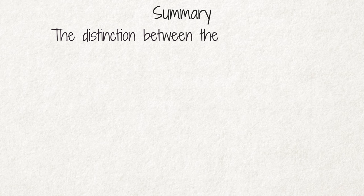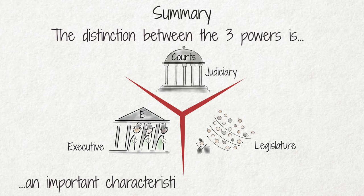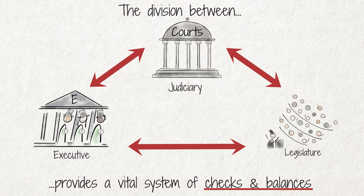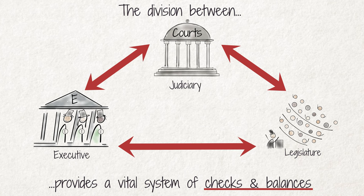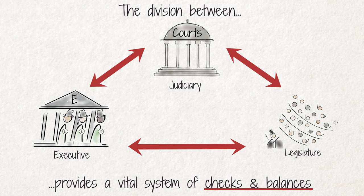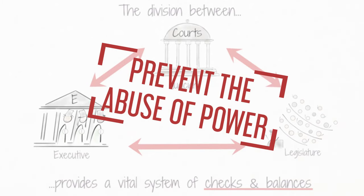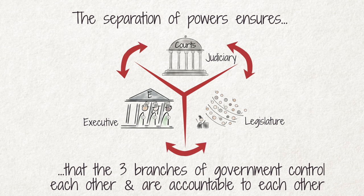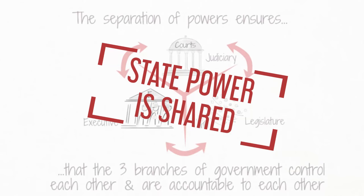Summary: The existence of a formal distinction between the three powers is an important characteristic of democratic governance. The division of powers between the legislature, executive, and judiciary provides a vital system of checks and balances, to prevent the abuse of power by government officials. The separation of powers ensures that the three branches of government control one another and are accountable to each other. This system further limits the power of each individual branch so that state power is shared.